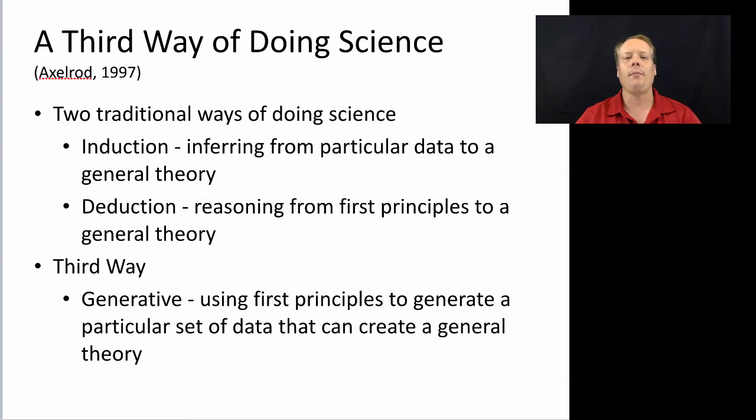And what he meant was that there are two traditional ways of doing science. It's induction, which is the inferring from particular data to a general theory. So, for instance, you collect a bunch of data about the way the world is that you've observed, and then you generate a theory from that. So maybe you run a bunch of experiments and you observe the results of those experiments, and then you come up with a theory about the way future experiments might work.